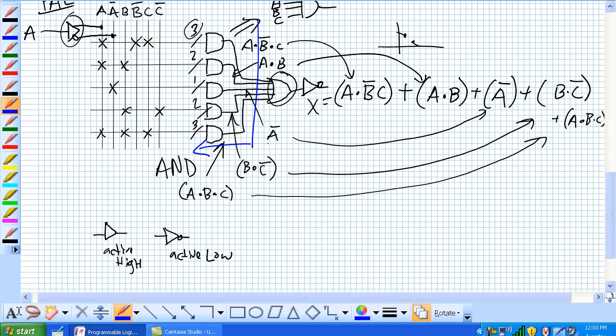Oh, the blue line, that's the AND array. This is the OR array on that side of the blue line.